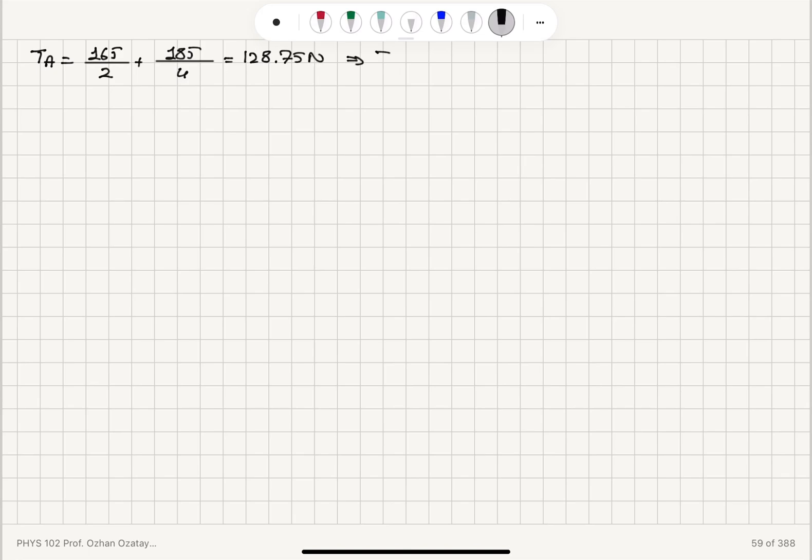So it will be 128.75 newtons. And the tension on wire B will be 350 minus tension on wire A. So this is 350 minus 128.75. So tension on wire B, we find 221.25 Newtons.